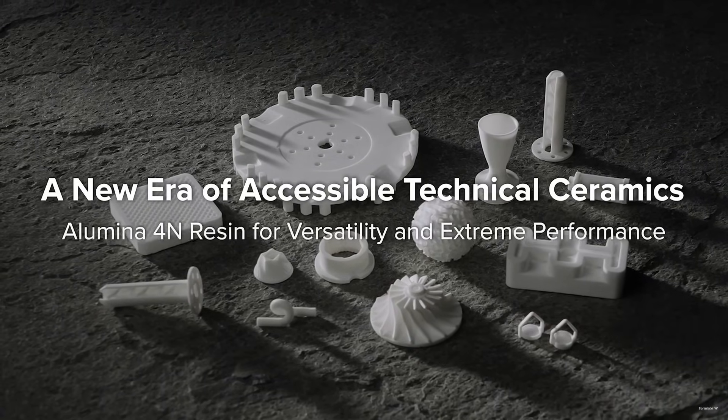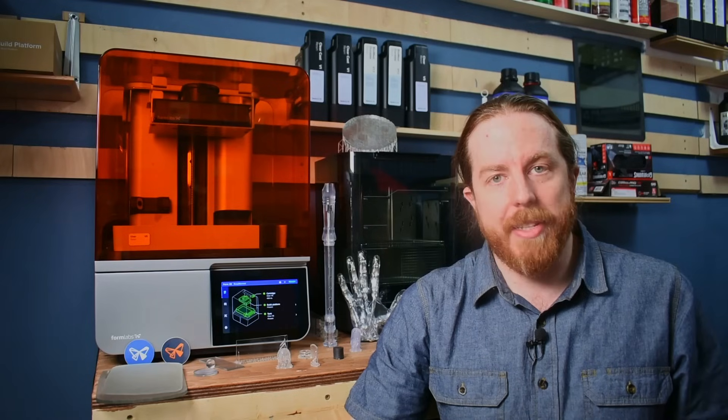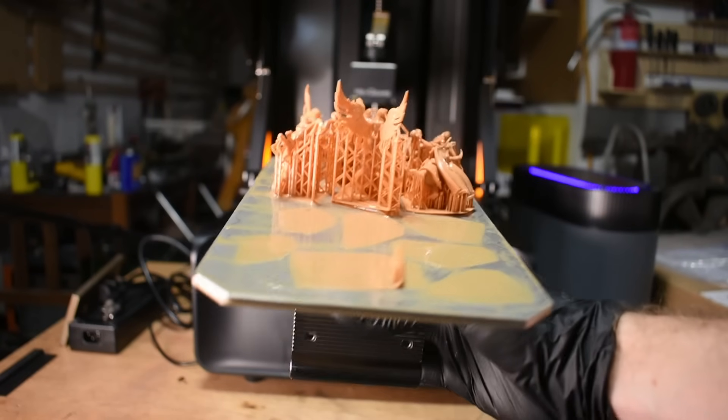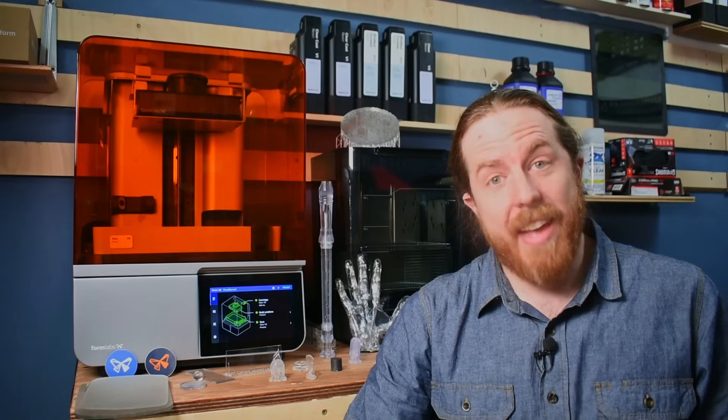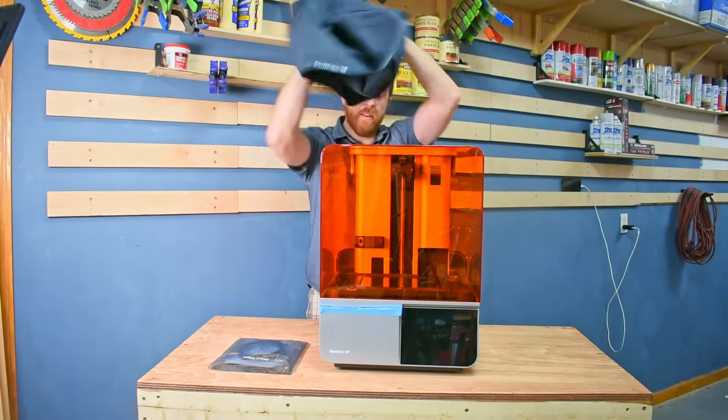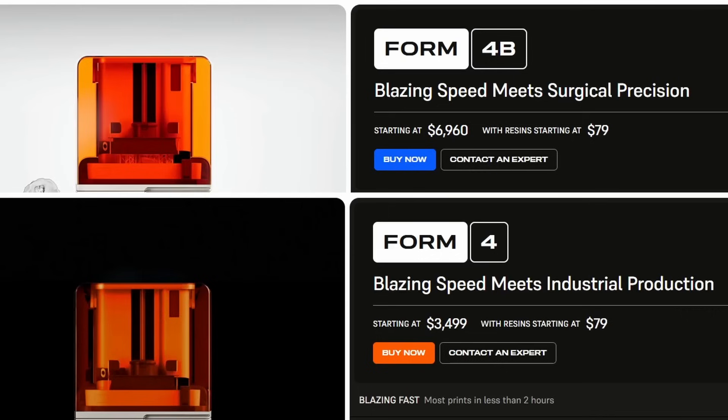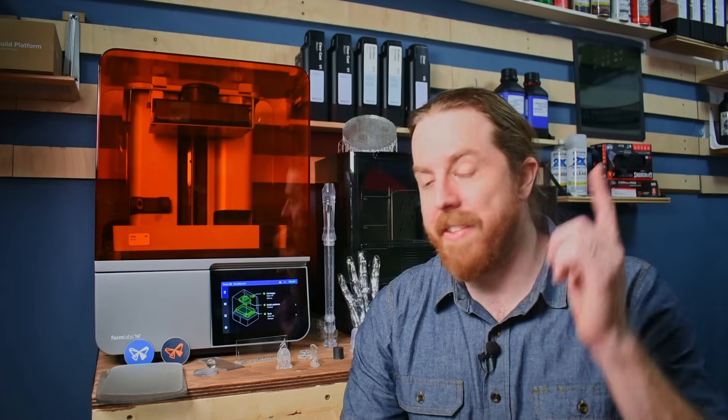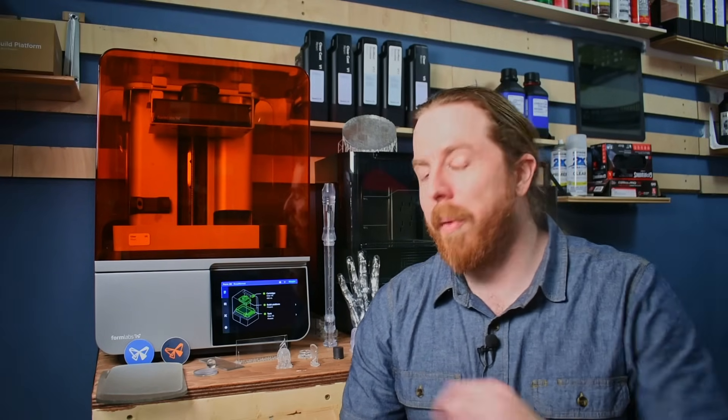Now imagine it also fixes everything you think is annoying about resin printing. The smells, the spills, the failures, the complication, the hours spent screwing with settings. This insane printer is the Form 4B. It has industrial capabilities and it has an industrial price to match.